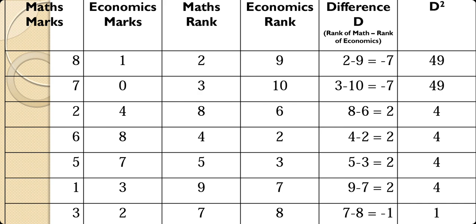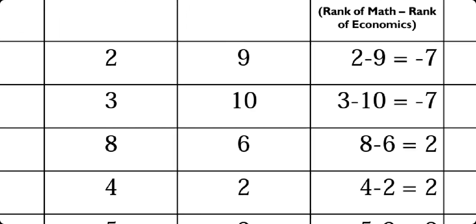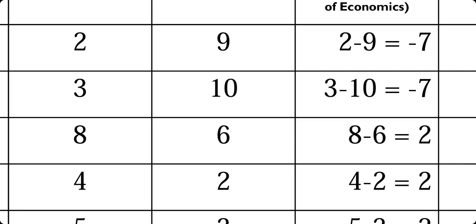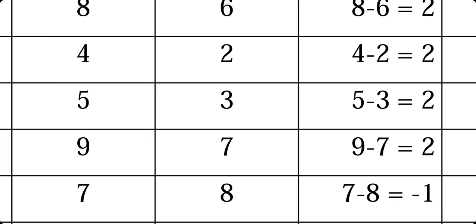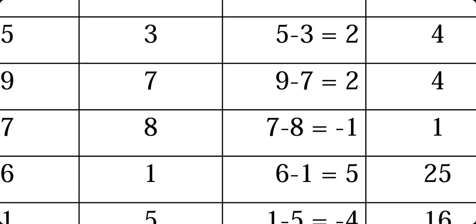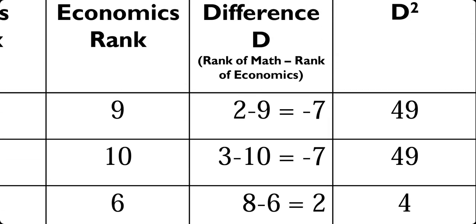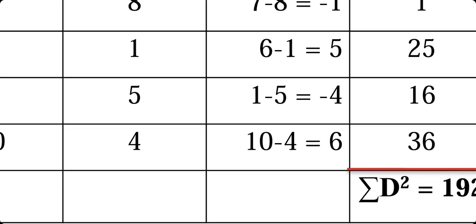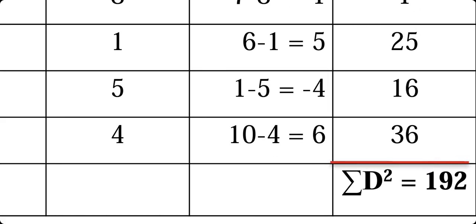In economics, 0 marks corresponds to rank 10 (last rank); if the least mark equals the 10th rank, the arrangement is correct. Next, calculate the difference d between ranks for each student: for example, rank 2 minus rank 9 = −7, rank 3 minus rank 10 = −7, and so on. Then square each d value: (−7)²=49, (−7)²=49, 2²=4, (−5)²=25, (−4)²=16, etc. Sum them to get ΣD² = 92.